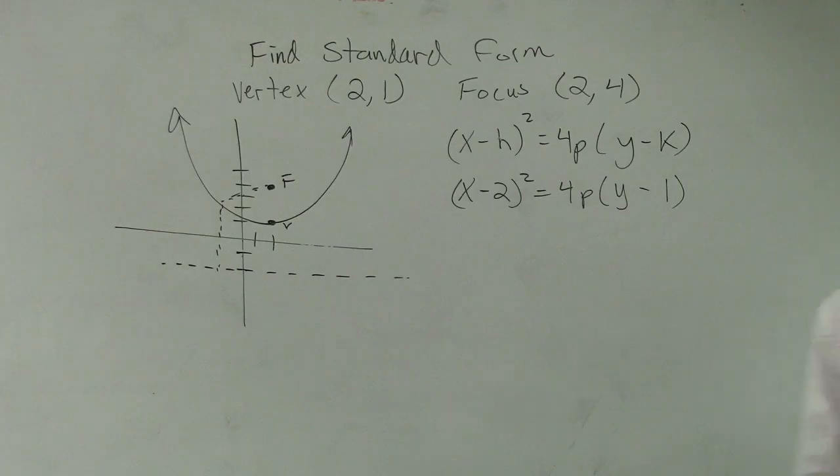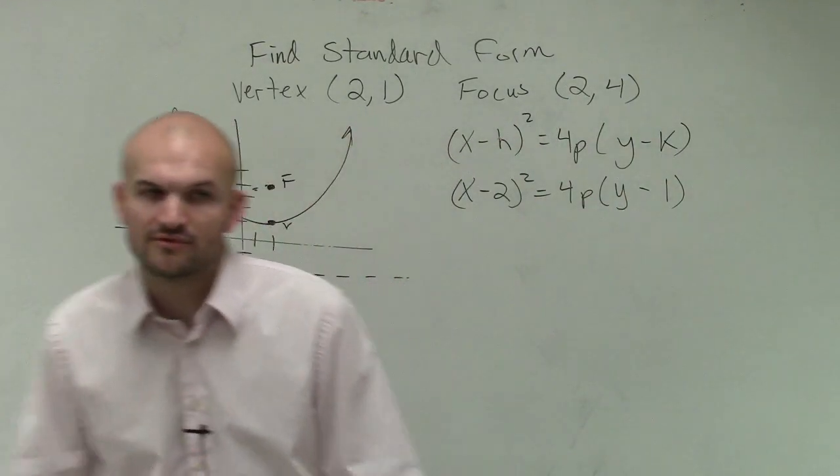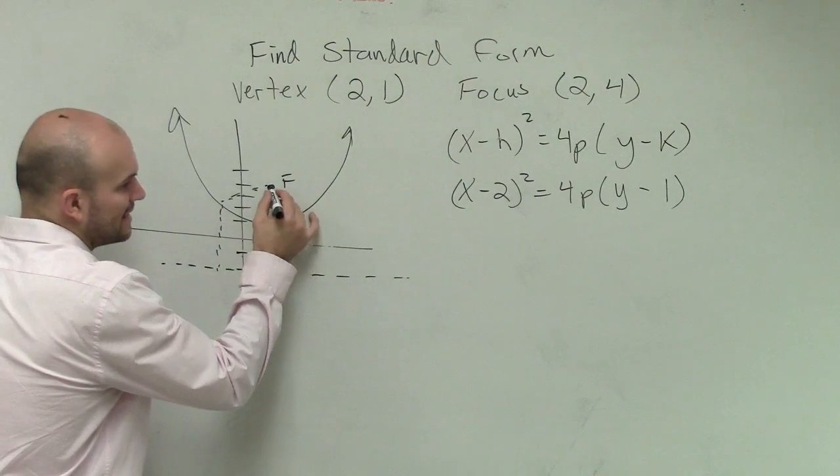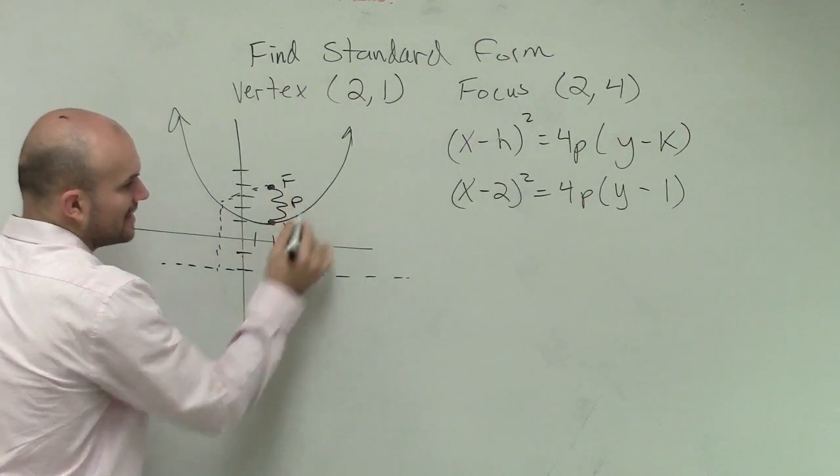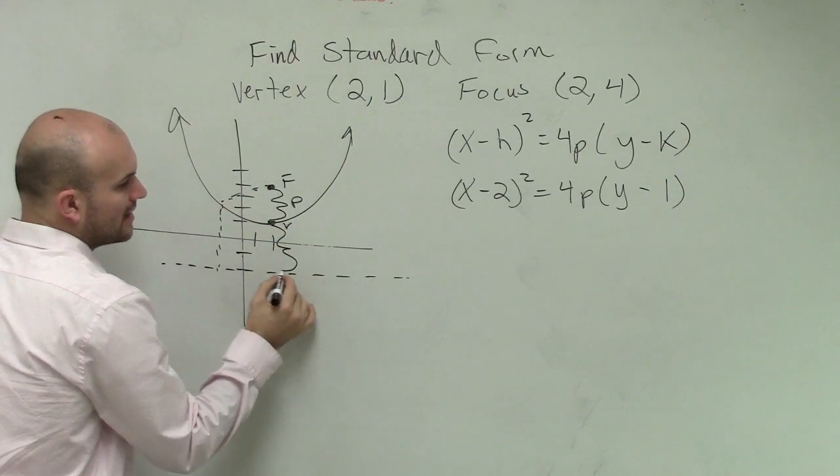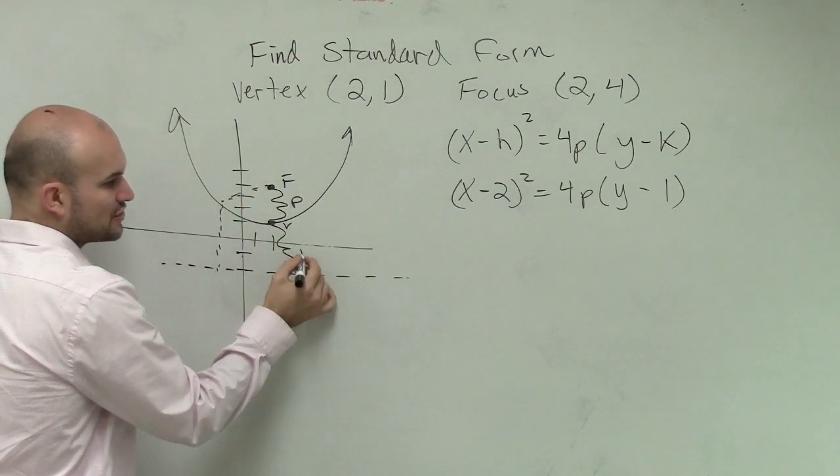So that was our h and our k. That's from what we've done before. But now we need to look at what is our p. Remember, the p is your distance from your vertex to your focus. And it's also a distance from your vertex to your directrix.